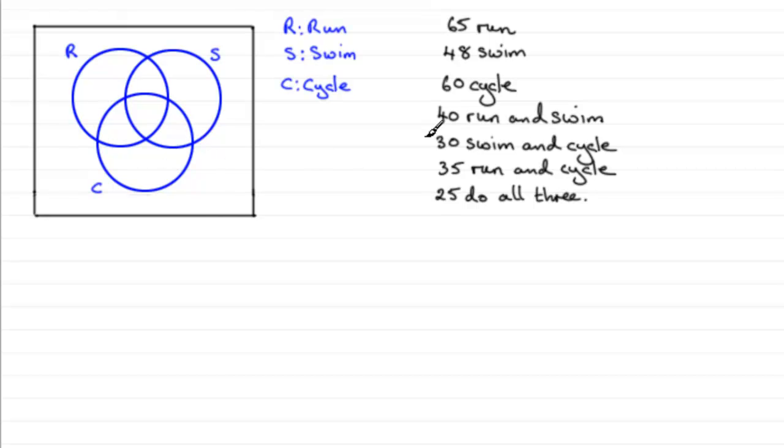Now it's very tempting in questions like this to always start from the top here, 65 running in this case, and just put 65 in this region here. Don't do that, because the 65 is distributed over these four regions in here.